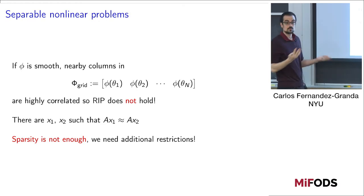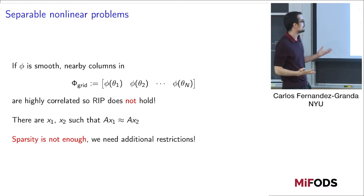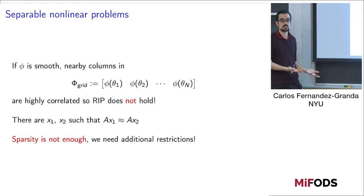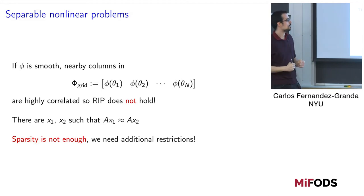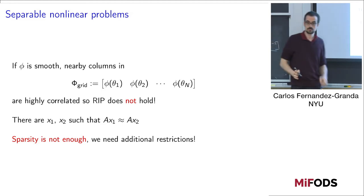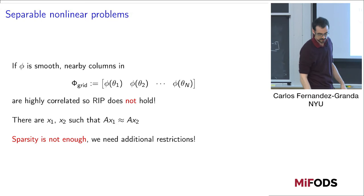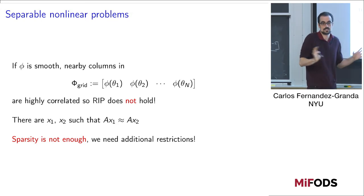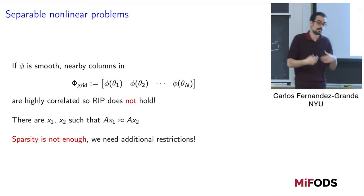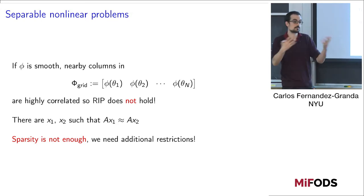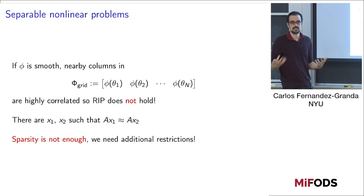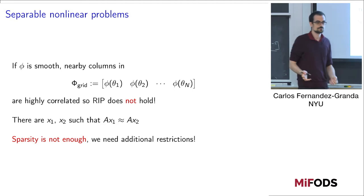So what do we do? This makes clear that sparsity alone is not enough, but under additional restrictions — specifically a minimum separation condition — we can still show that things work. The bottom line is that compressed sensing theory does not apply, because in fact general sparse recovery for this kind of dictionary is impossible, at least in a stable way.